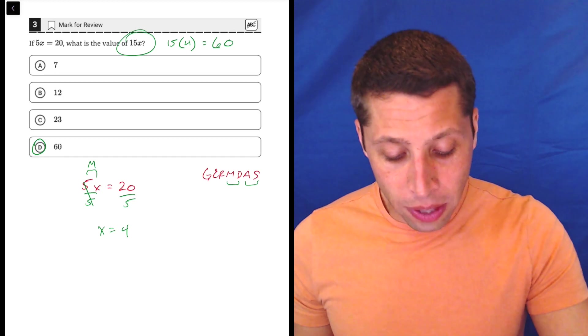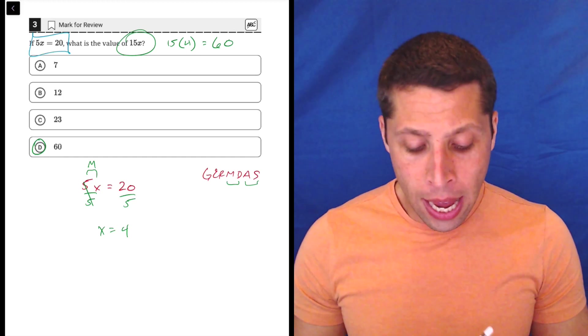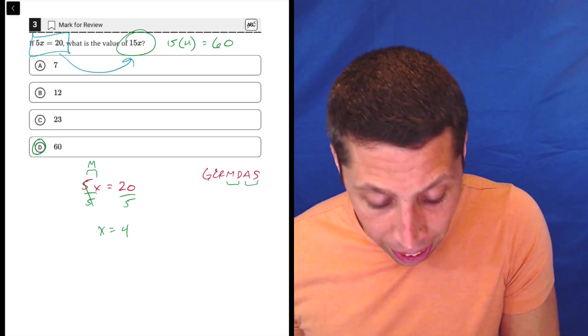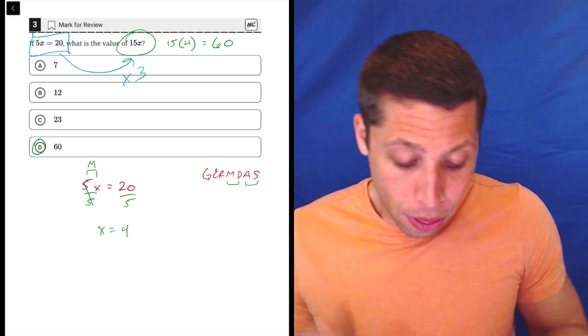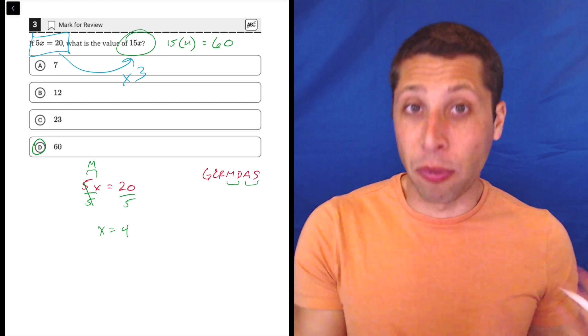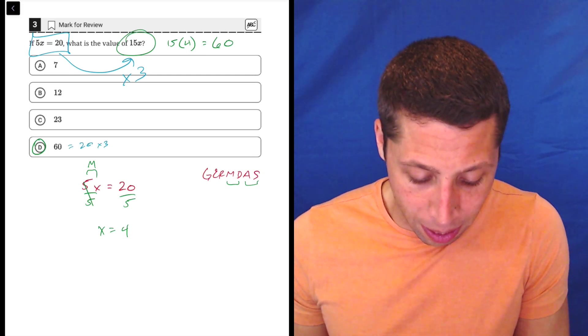Now some of you may have noticed that we can just take the original expression that we were given, 5x equals 20, and think 'okay, well in order to get 5x to become 15x we would multiply by 3.' So we can do that to both sides, right? We can do that to the 5x and it becomes 15x, and if we do that to the 20 it becomes 60. Right? 20 times 3 is 60.